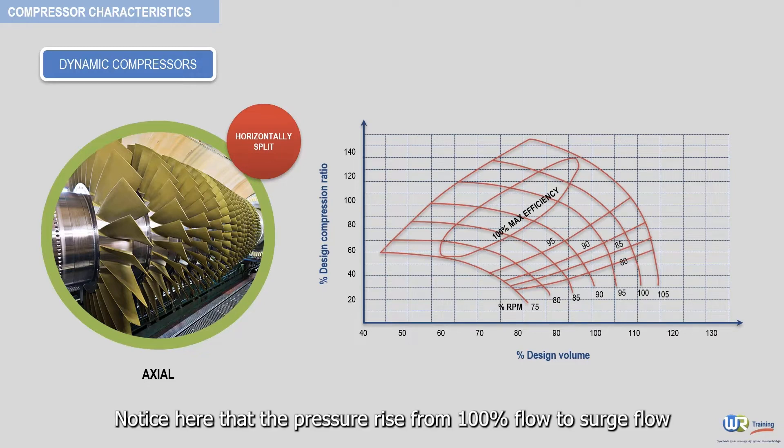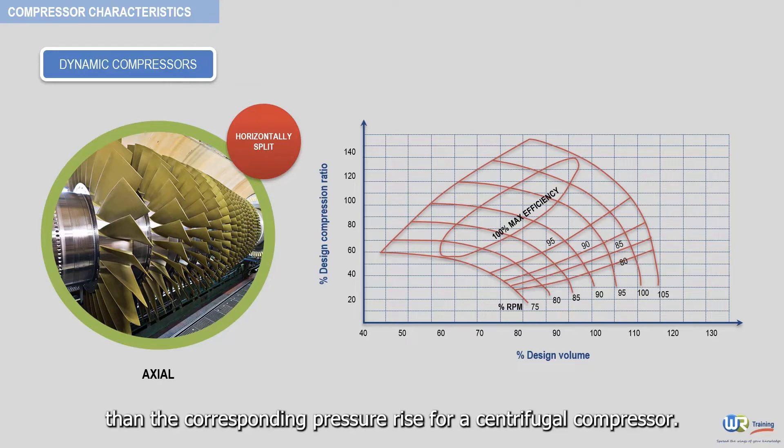Notice here that the pressure rise from 100% flow to surge flow is always greater than the corresponding pressure rise for a centrifugal compressor.